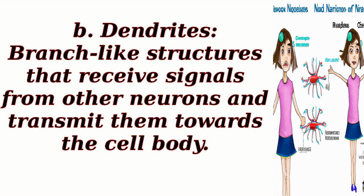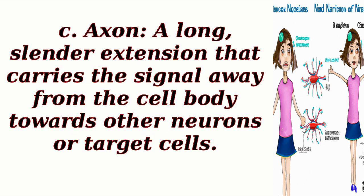Dendrites are branch-like structures that receive signals from other neurons and transmit them towards the cell body. The axon is a long, slender extension that carries the signal away from the cell body towards other neurons or target cells.